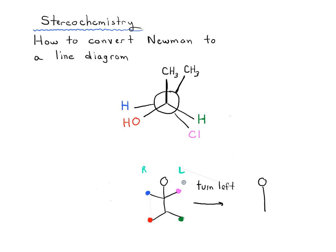What would it look like if that person turns to face us on the left side? In chemistry, we show things pointing out towards us with wedged lines and things pointing away with dashed lines. So the left foot and left hand would be pointing towards us, while the right foot and right hand would be pointing away. The axis — the torso — remains in the plane and doesn't change.